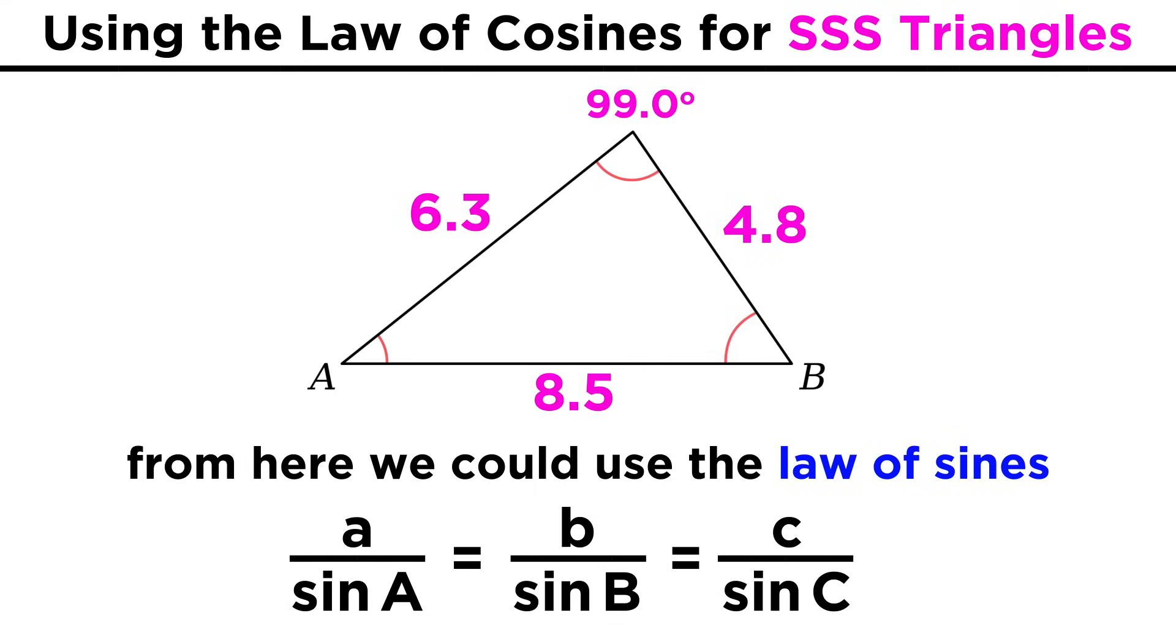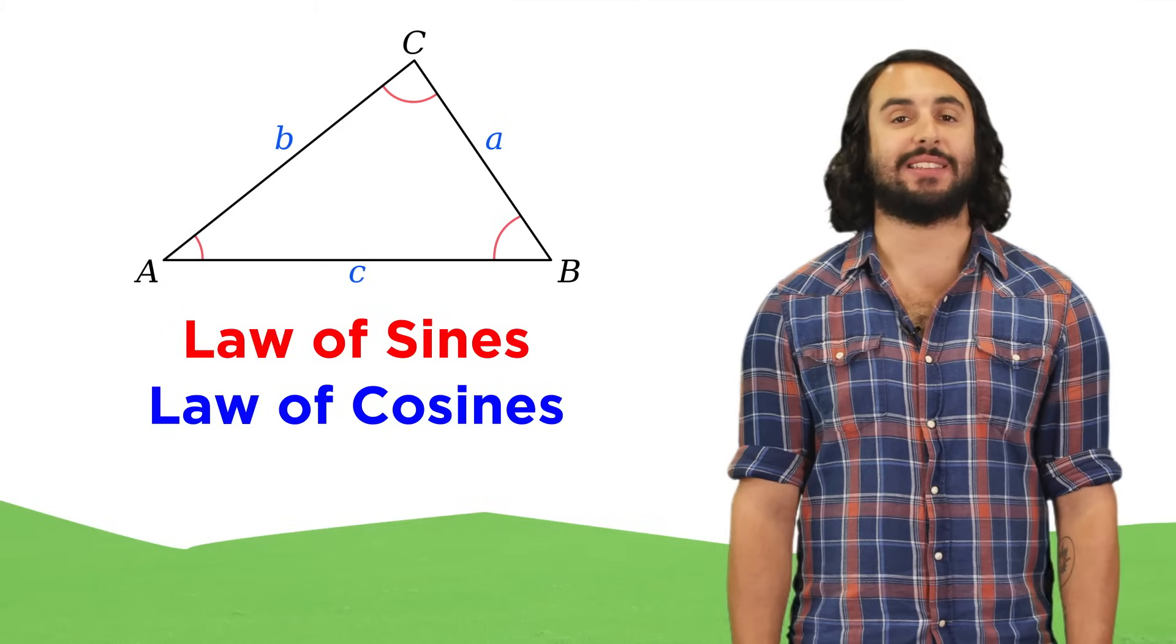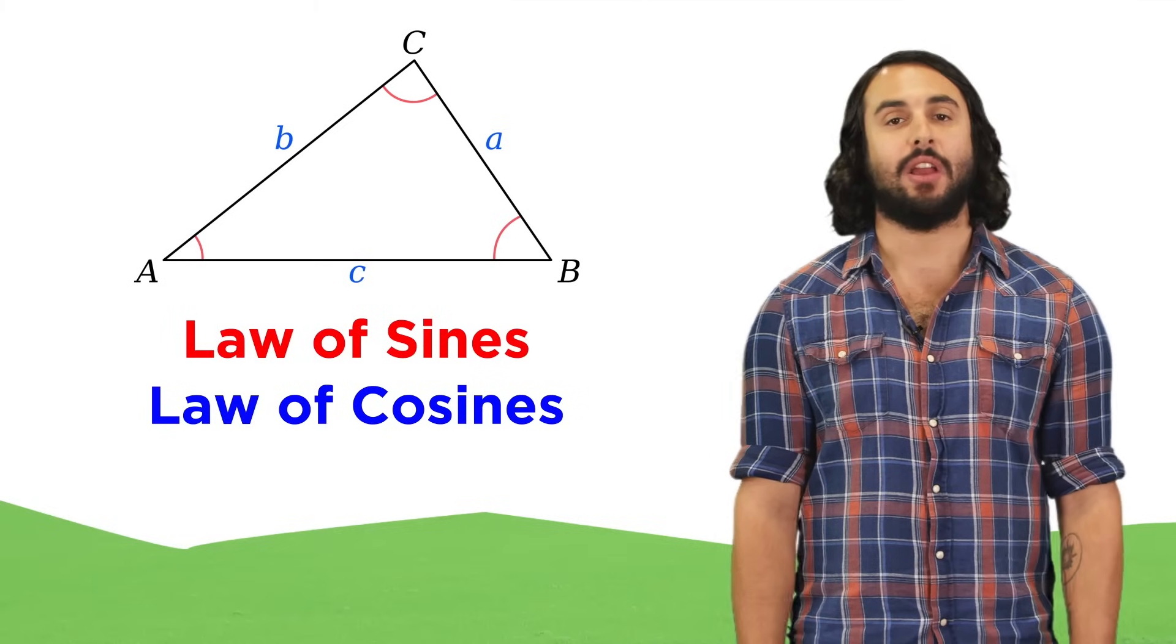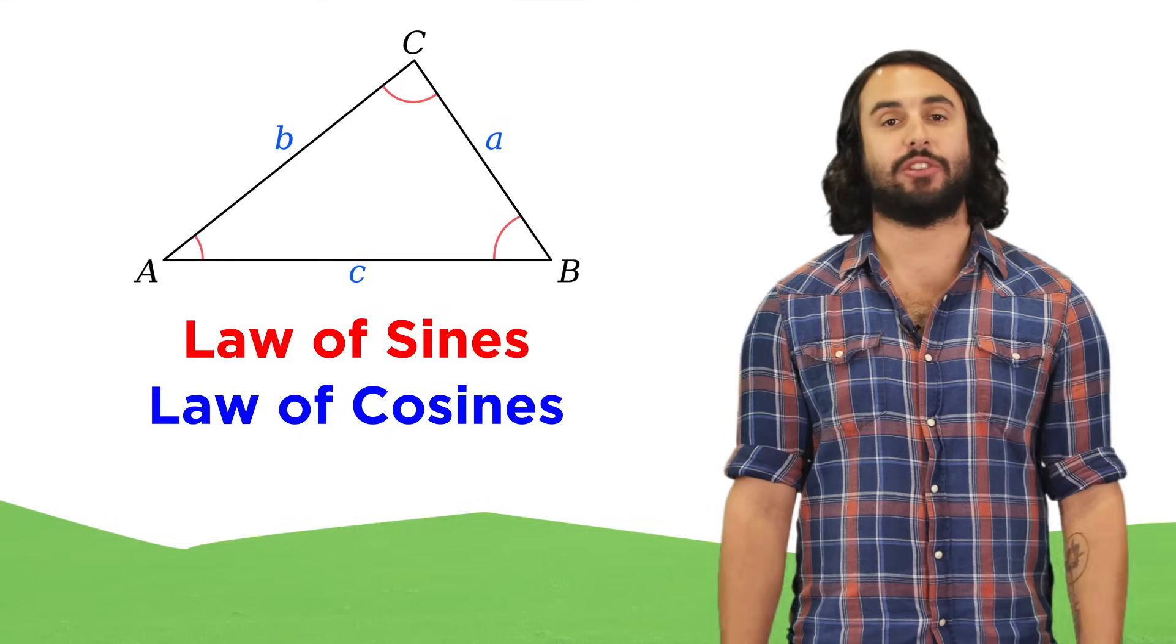From here, we just use the law of sines to get one more angle, and then subtract these two from one eighty to get the third angle. So as we can see, both the law of sines and law of cosines are very straightforward in their application. So let's go ahead and check comprehension.